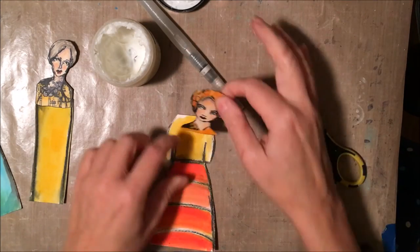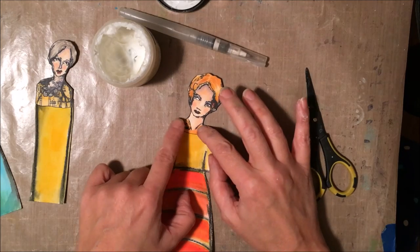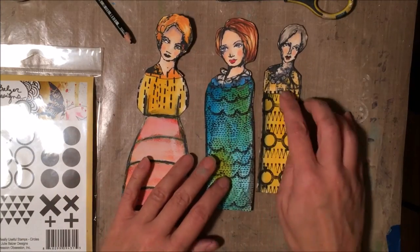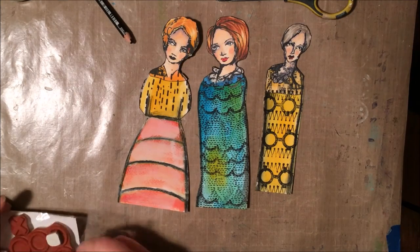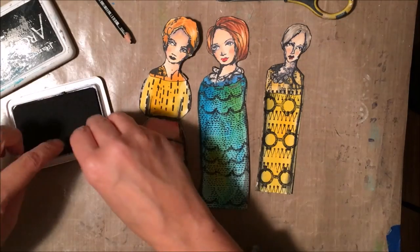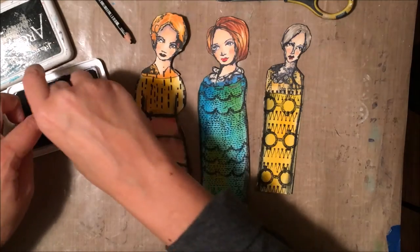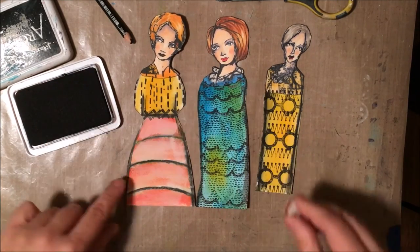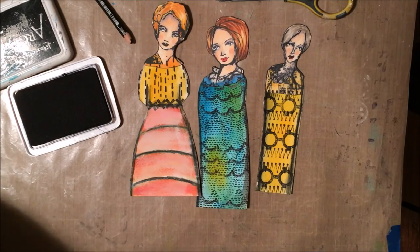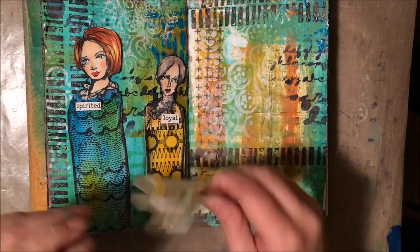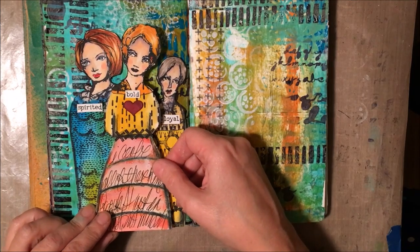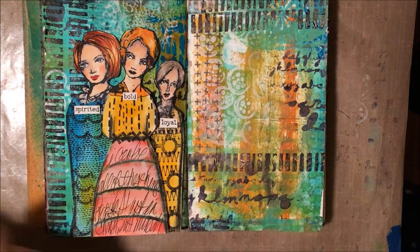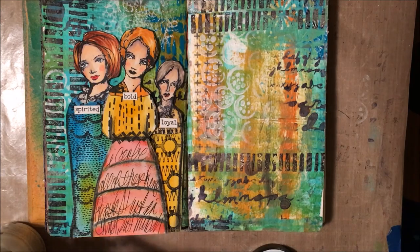And so now I'm going to attach the heads onto the bodies. And then I really was trying to hide where the head and the body was. So I took some more stamps from Julie Fei-Fan Balzer and also Wendy Vecchi. And I just added some design onto their dresses. And that kind of hides where their heads are attached onto their dresses.